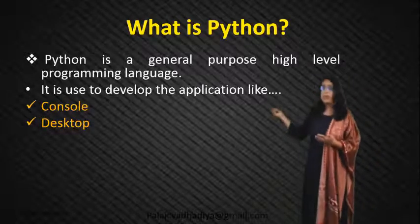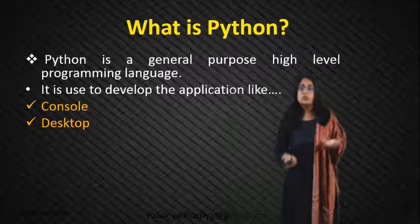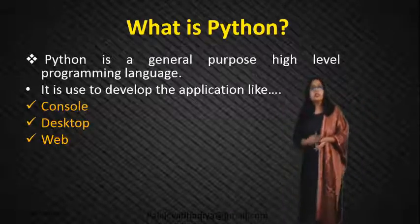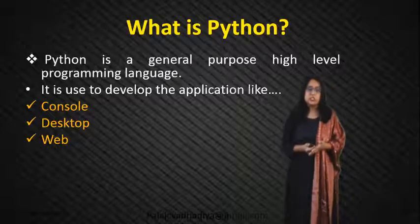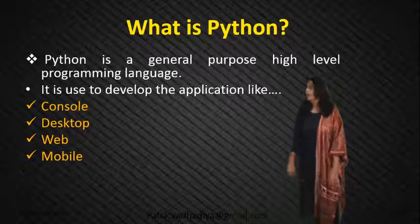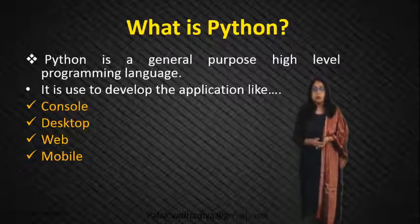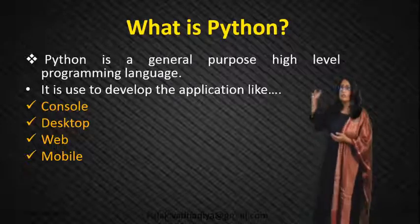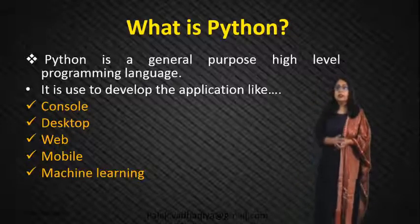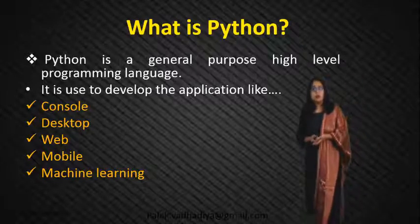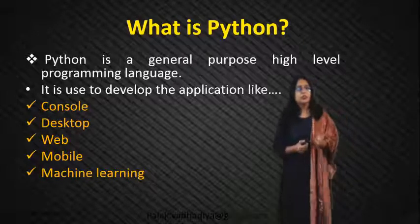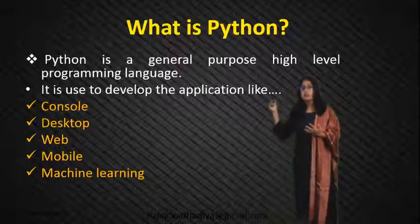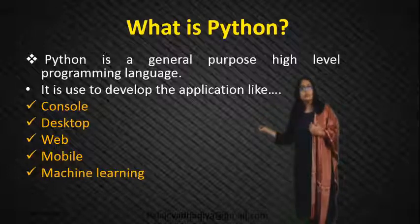The best example of a desktop application is a calculator. Such kinds of applications you can develop with the help of Python. We can also develop web applications and mobile applications. Python is not much more popular for mobile applications, but yes, you can develop mobile applications with the help of Python. Then there is machine learning — when you want to write code using machine learning, there are two options: you can write your code in Python or in R.